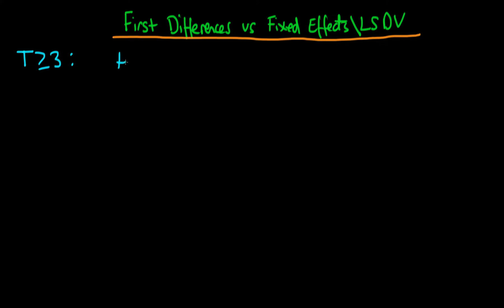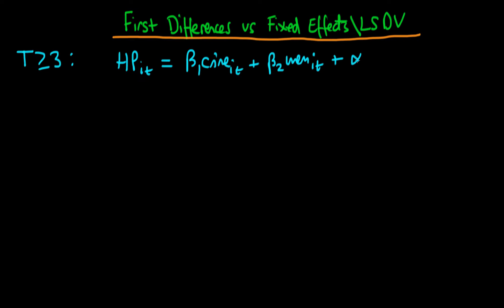The model we are working with as an example is: house prices in city i at time t is equal to beta 1 times the crime rate in city i at time t, plus beta 2 times the unemployment rate in city i at time t, plus the unobserved heterogeneity term alpha i, and the idiosyncratic error u_it.